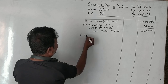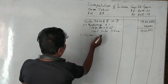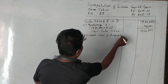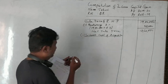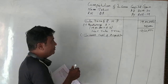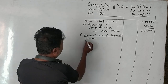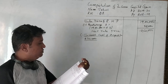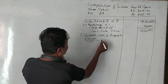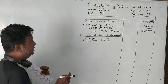From the net sale price, we deduct the indexed cost of acquisition. The property was purchased in 2003 for Rs. 2,34,000. CII for 2003-04 is 109 and for the sale year 2018-19 is 280. So the indexed cost of acquisition is 2,34,000 divided by 109 into 280.